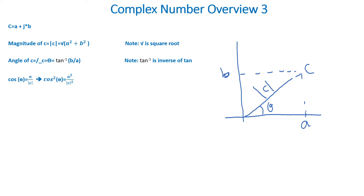Now let's look at the graph to the right, which is a graphical representation of c. If we look at cosine theta, we find that cosine theta is equal to a divided by c.